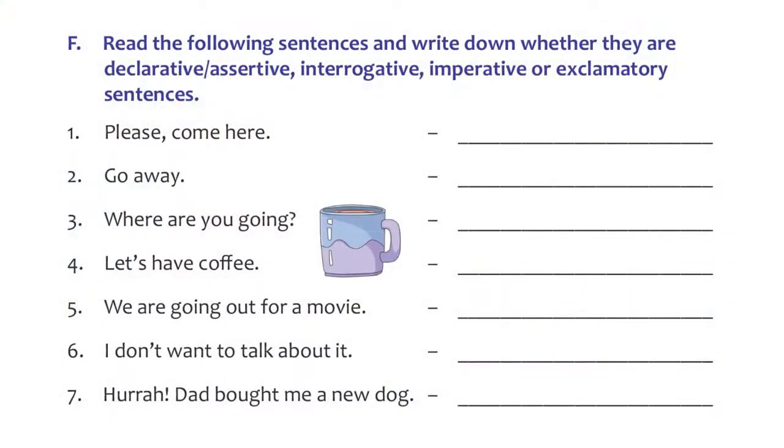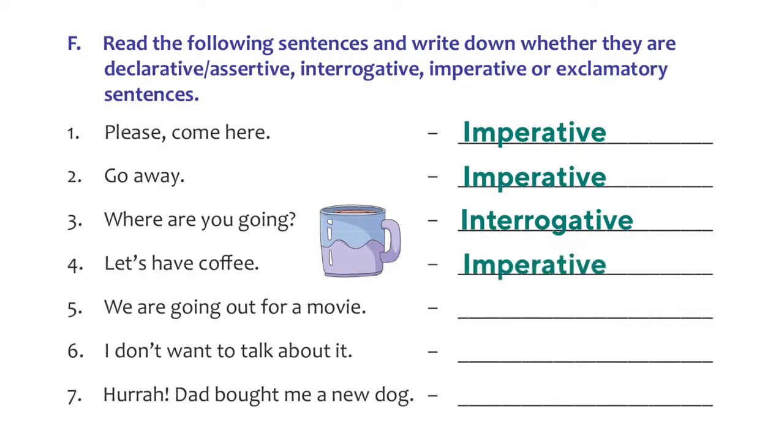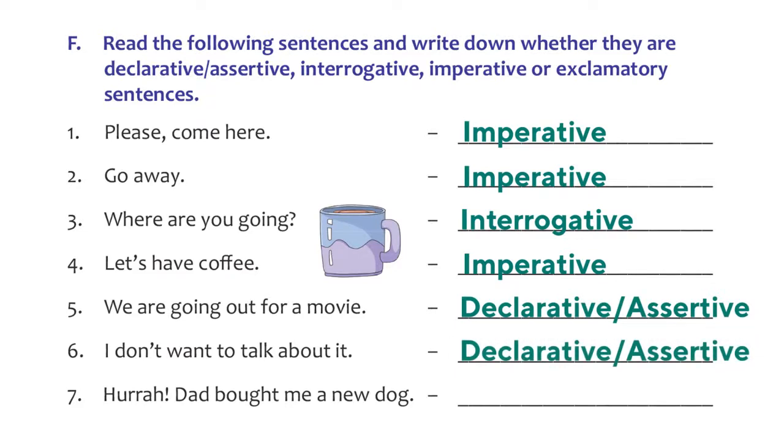There is an exercise that's given where you have to decide what kind of sentence each one is. Let's look at it. One, please come here. It's an imperative sentence, expresses a command or a request. Second one, go away, imperative sentence. Third one, where are you going? Easy, it's an interrogative sentence, asks a question. Fourth one, let's have coffee, imperative sentence. Fifth one, we are going out for a movie, declarative or assertive sentence. Sixth, I don't want to talk about it, declarative or assertive sentence. Seventh one, hurrah, dad bought me a new dog, exclamatory sentence.